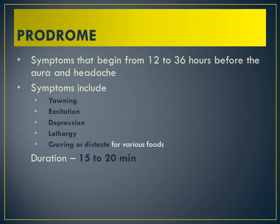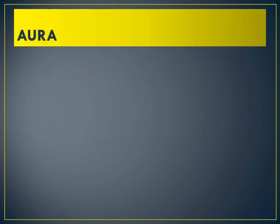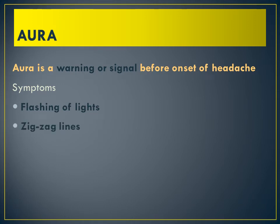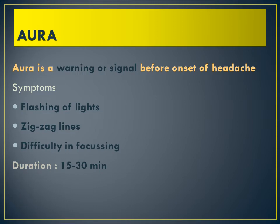The aura is a warning signal before the onset of headache. Its symptoms include flashing of lights, zigzag lines, and difficulty in focusing. Its duration is also 15 to 30 minutes.